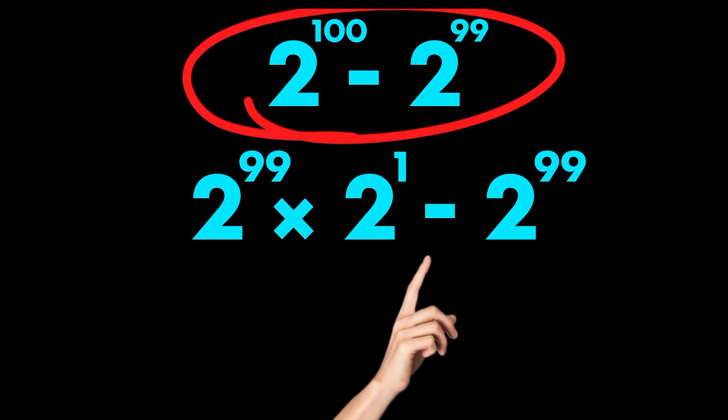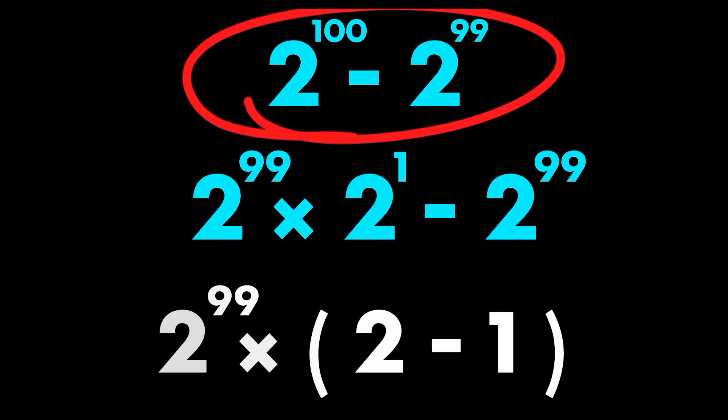Both terms share 2 to the power of 99, so factor it out. You get 2 to the power of 99 times open parenthesis 2 minus 1 close parenthesis.